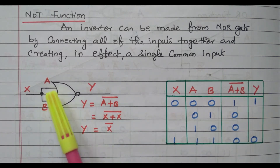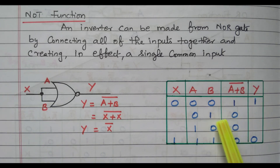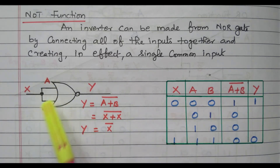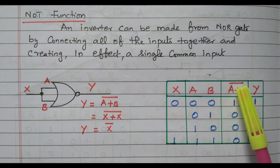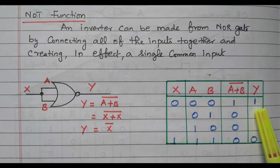We got the NOT operation by connecting both inputs together, having a common input. We will verify with the truth table. There are two inputs and four combinations: 0,0 / 0,1 / 1,0 / 1,1. If X is 0, then A is also 0 and B is also 0, both connected together. So 0 plus 0 is 0; while taking the complement it becomes 1. So if the input is 0, the output is 1.